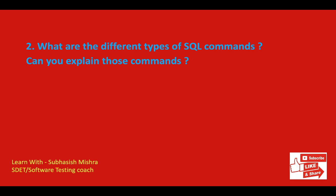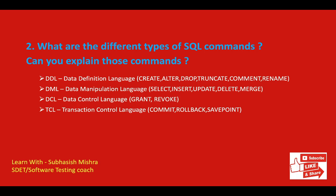What are the different types of SQL commands and can you explain those commands? This is a very basic question — people want you to understand the basic commands available in SQL. There are four different types of SQL commands: DDL, DML, DCL, and TCL. DDL is known as Data Definition Language, and DDL statements are used to define the database structure or schema. Examples include: CREATE, ALTER, DROP, TRUNCATE, COMMENT, and RENAME.